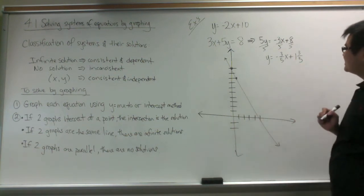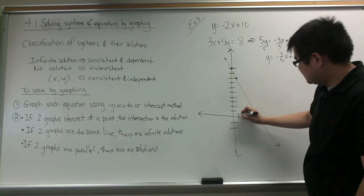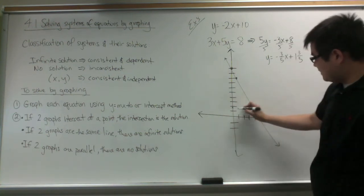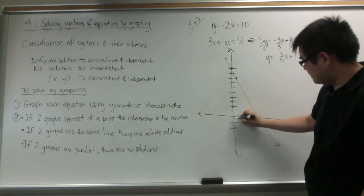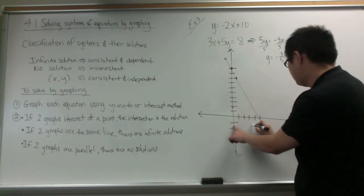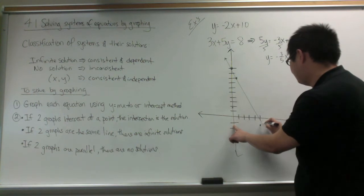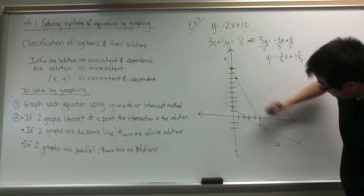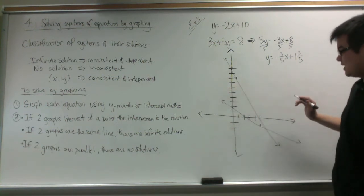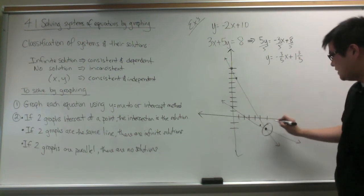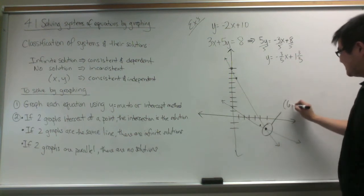Then, for the second one, the y-intercept is about 1.6. Then, we are going to go down 3 and over 5. We draw that line. Using a straight edge would be very wise. The intersection is this point right here, which is (6, -2).